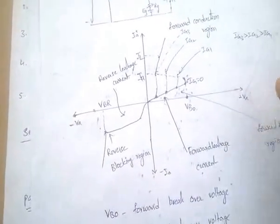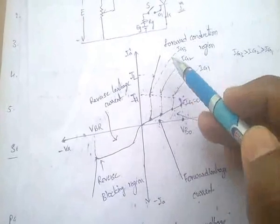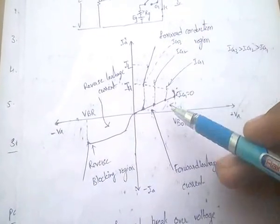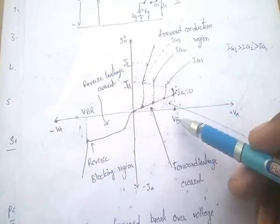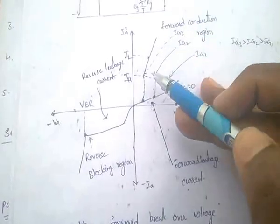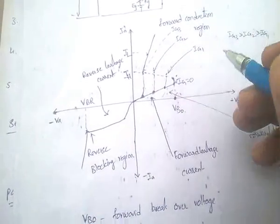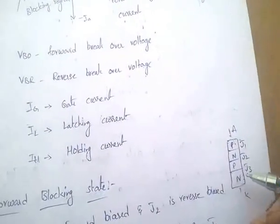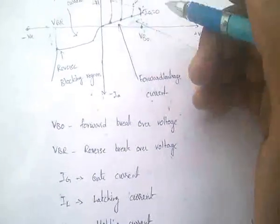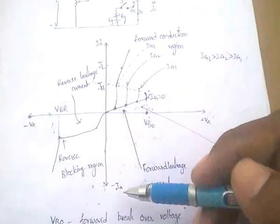In the forward conduction region, when the voltage reaches the forward break-over voltage (VBO) without any gate signal, all three junctions J1, J2, J3 become forward biased and the SCR starts conduction.